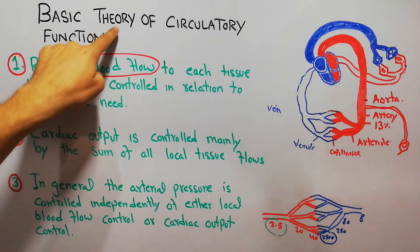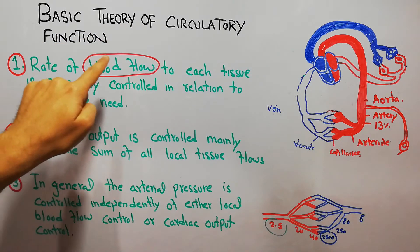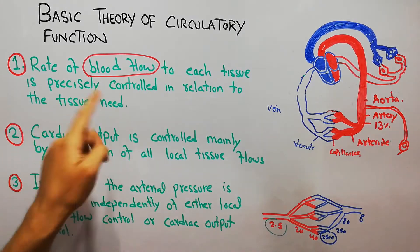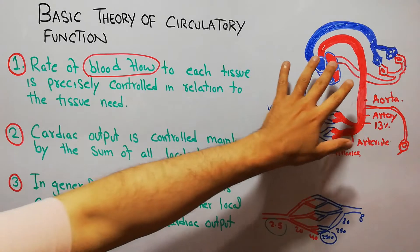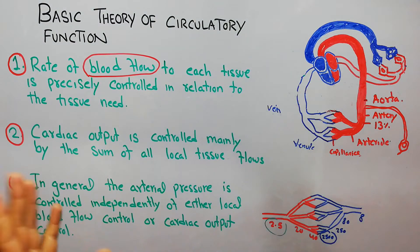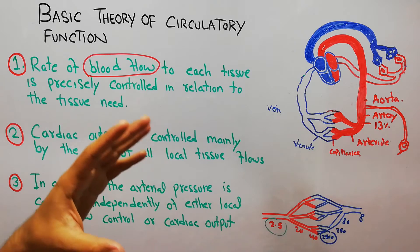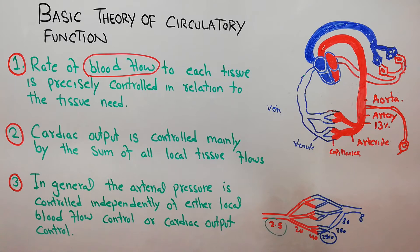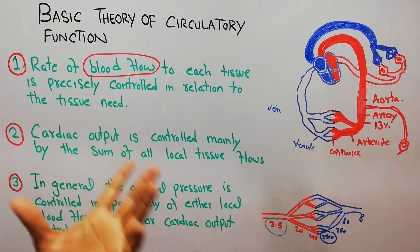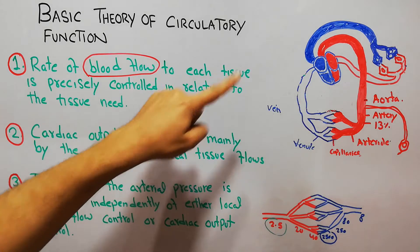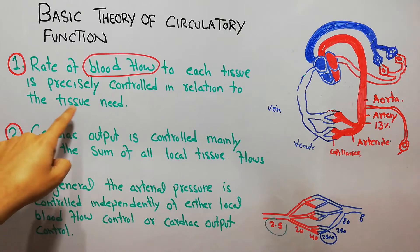The first point of the basic theory of circulatory function is that the rate of blood flow to each tissue is precisely controlled in relation to the tissue need. The heart pumps blood to all tissues and organs — the kidneys, liver, intestine, muscles, and bones — but blood flow to each tissue is controlled in relation to its need.